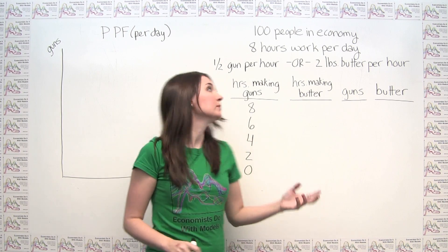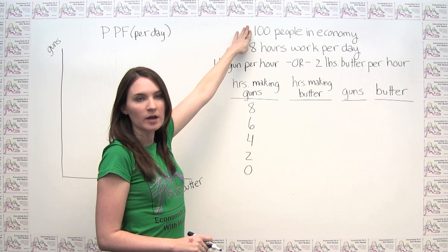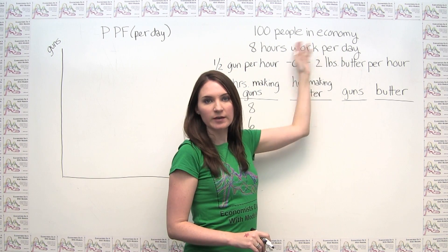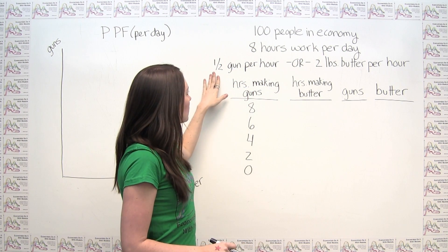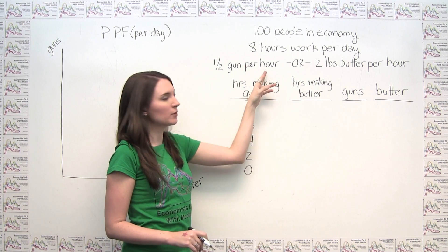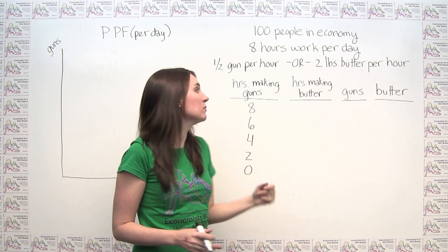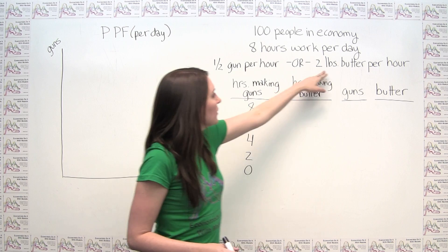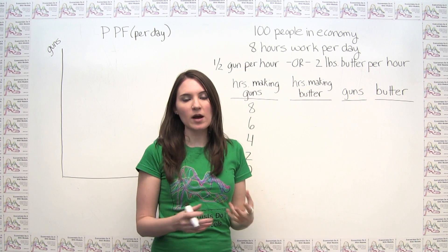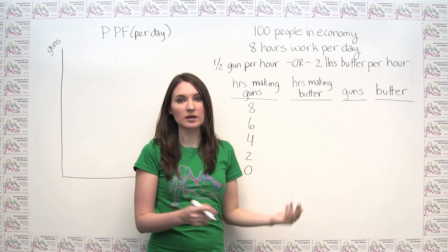Our example uses the following setup. We've got a hundred people in our very simple economy. Each of these people works eight hours per day. Each person can either make half of a gun per hour — in other words, it takes them two hours to make one gun — or they can make two pounds of butter per hour. So they have to think about what combinations they can produce if they split their time between making guns and making butter.